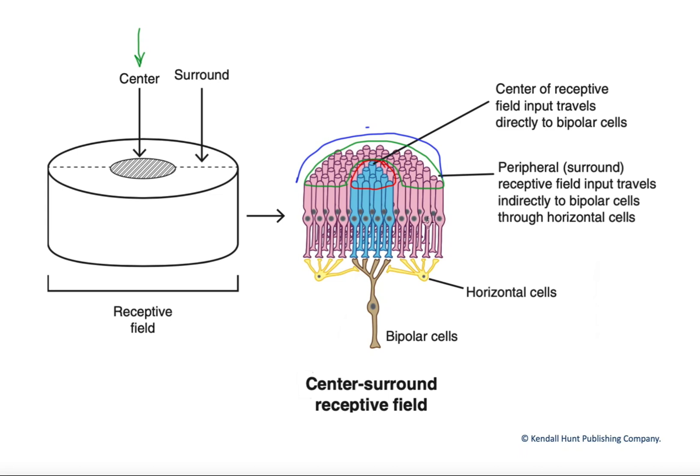It does create a situation where rods provide low-definition vision, but it saves us an enormous amount of visual processing because every rod is not wired through its own bipolar cell to its own ganglion cell.